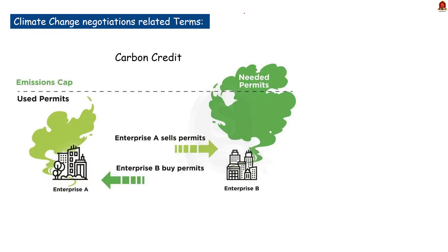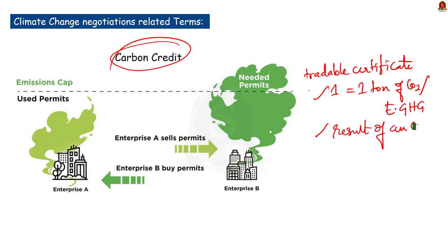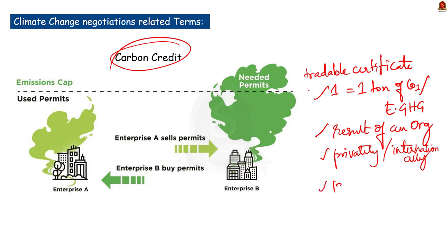The next term to note is carbon credit. A carbon credit is a tradable certificate representing the right to emit 1 ton of CO2 equivalent — so 1 carbon credit equals 1 ton of carbon dioxide equivalent greenhouse gas. Carbon credits are not generated by projects designed to specifically cut greenhouse gas emissions; they are the result of an organization reducing their emissions below the forecast. Carbon credits can be sold privately or in the international market. This carbon credit market formally started in 1997 under the UN's Kyoto Protocol on Climate Change, with a group of developed countries pledging to reduce and limit their greenhouse gas emissions.